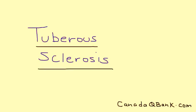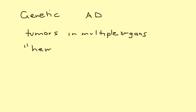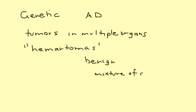Tuberous sclerosis is what I will discuss in this video. Tuberous sclerosis is essentially a genetic disorder — autosomal dominant — and it involves tumors in multiple organs. Those tumors are given a special name: they're called hamartomas. Hamartomas are benign tumors that are essentially a mixture of various cells.